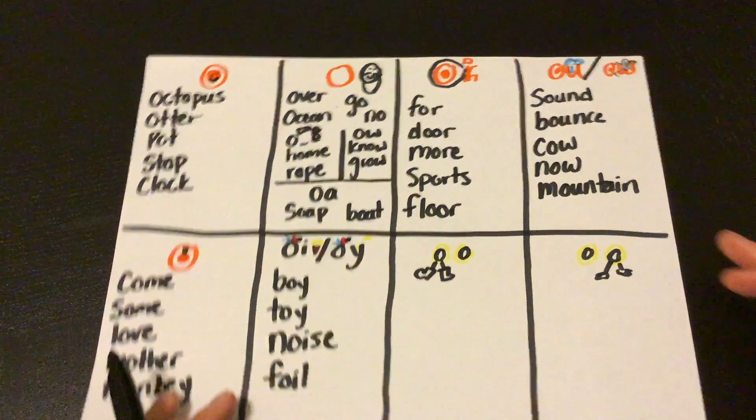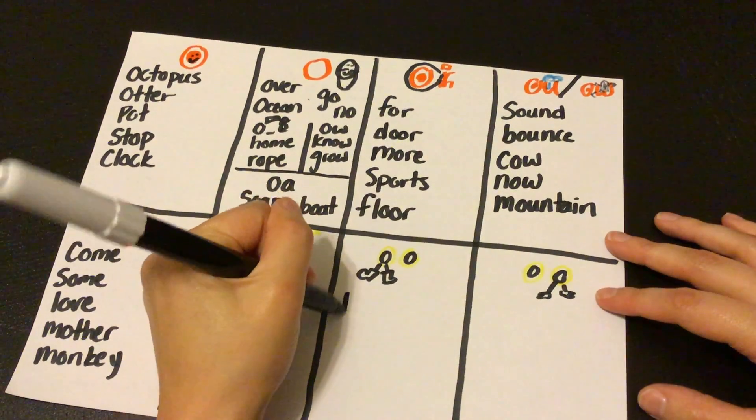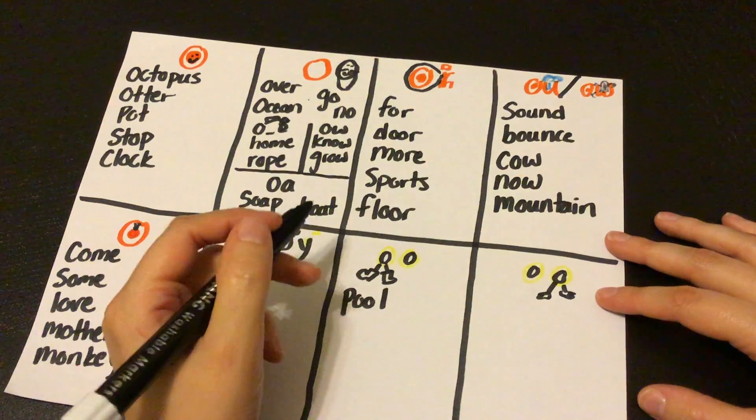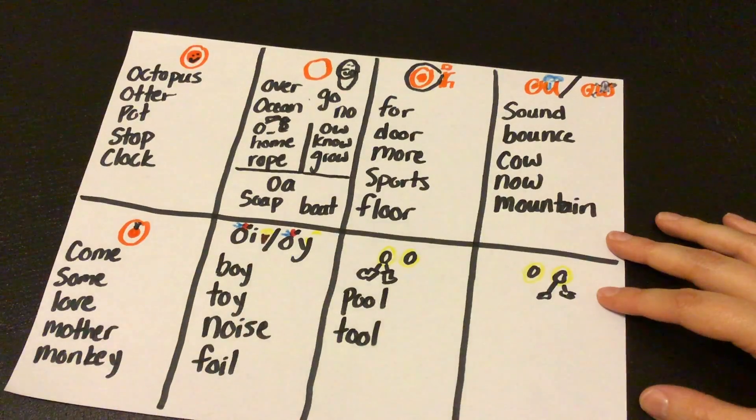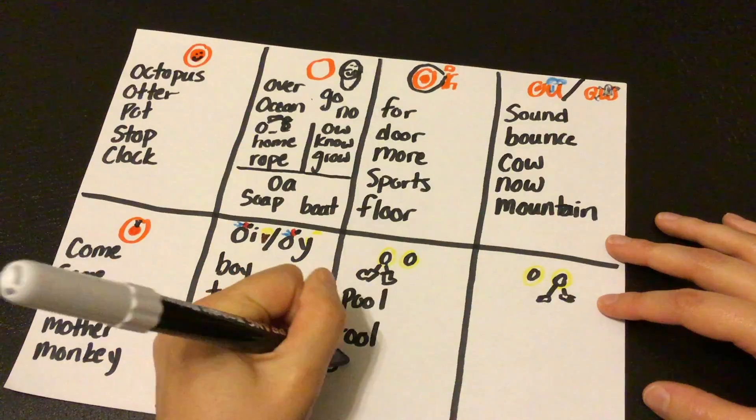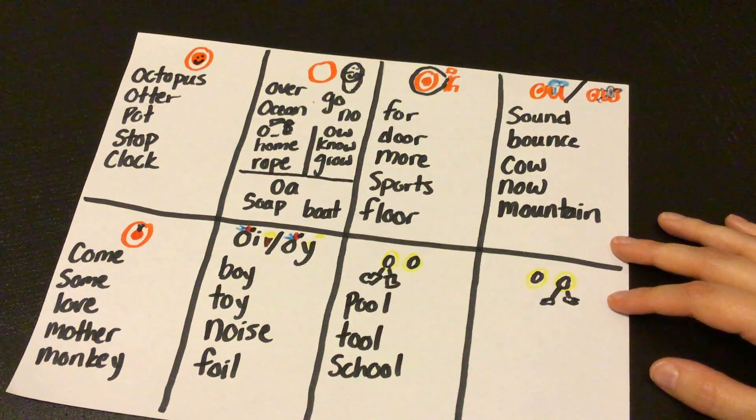And then our boot and foot twins, right? Boot, boot. We have words like pool, pool, or tool, school, right? Boot.